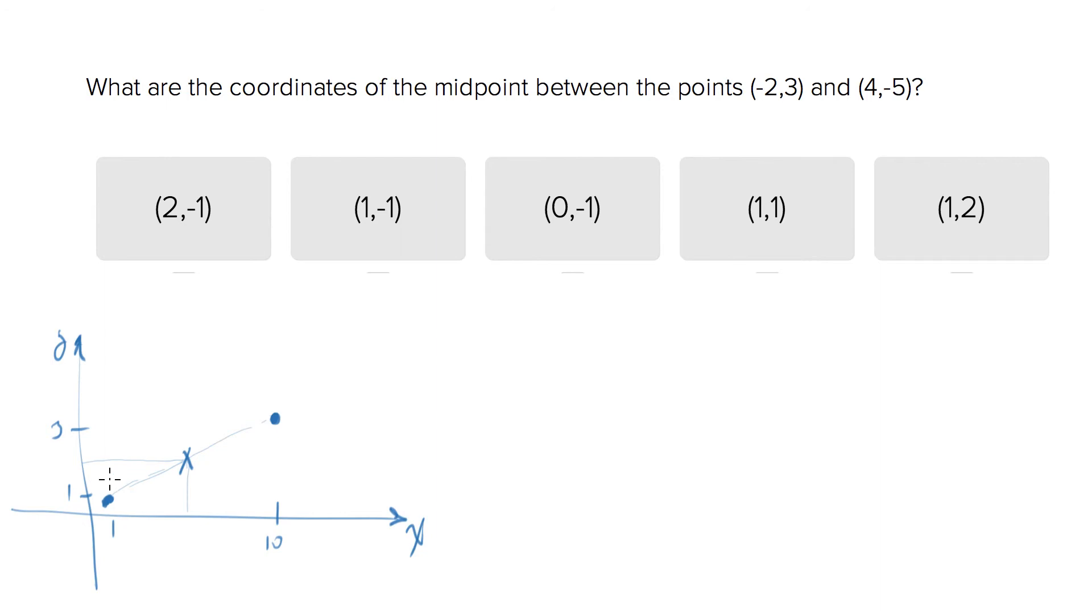So let's take the X coordinates, which are -2 and 4, and find the average of the two. So this would be 1. This is X.